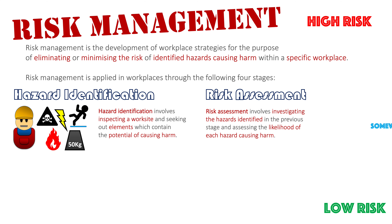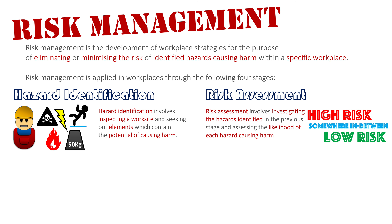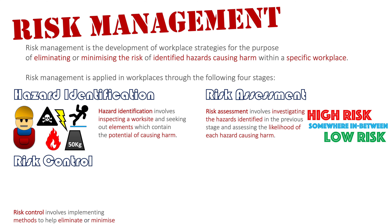What essentially happens here is we determine whether hazards are high risk, low risk, or somewhere in the middle, and try to put a value on them — determining whether these hazards are going to cause harm to individuals that work within the workplace or anyone that comes into it. Once we've assigned that value, we can move on to the next stage, which is risk control.